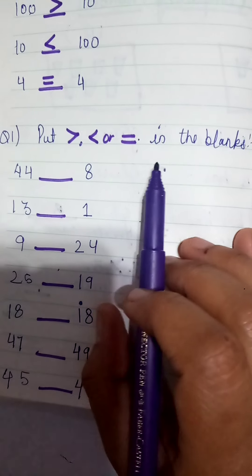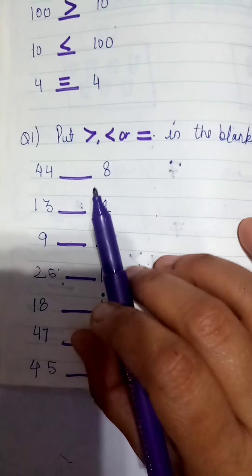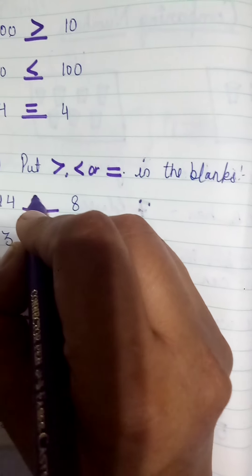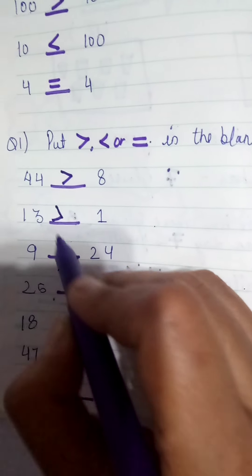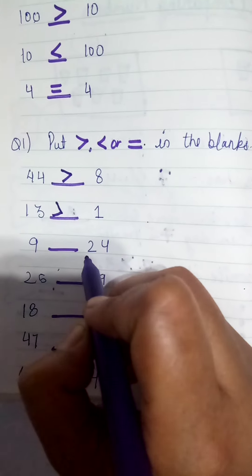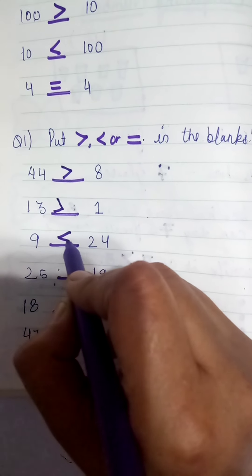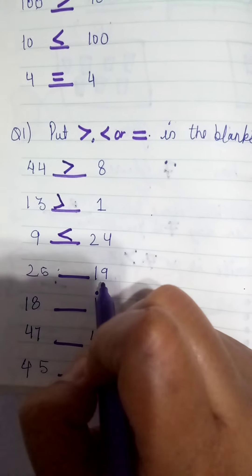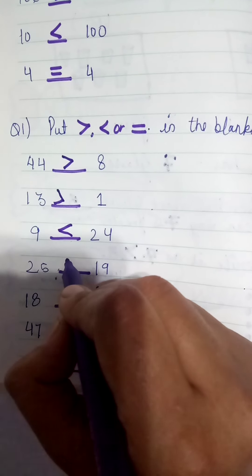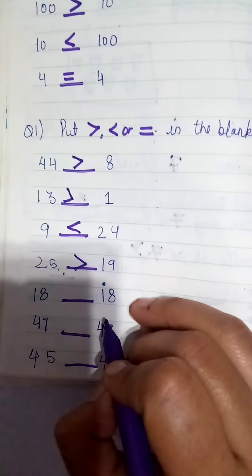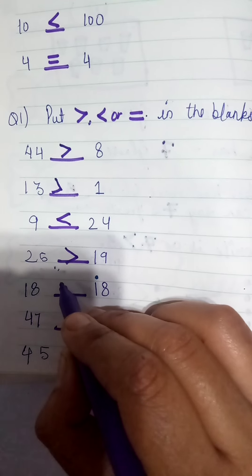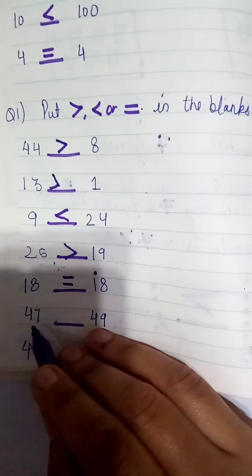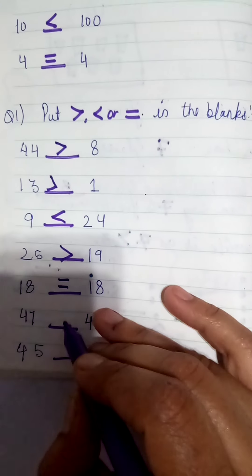Let's solve some sums — put greater, smaller, or equal in the blank. Forty-four and eight: which one is greater? Alligator will eat forty-four. Then thirteen and one: which one is greater? Alligator will eat thirteen. Nine and twenty-four: which one is greater? Alligator will eat twenty-four. Twenty-five and nineteen: turn the alligator's mouth from the greater side — twenty-five. Eighteen and eighteen: the alligator will not eat equal same numbers, so you will put equal. Forty-seven and forty-nine: which one is greater? Forty-nine.